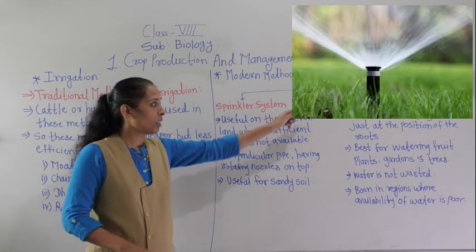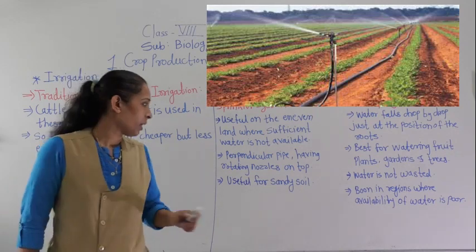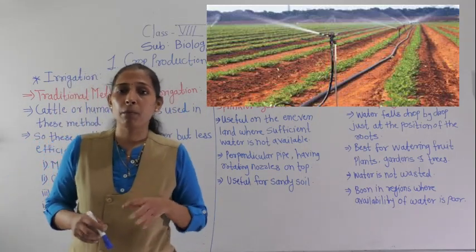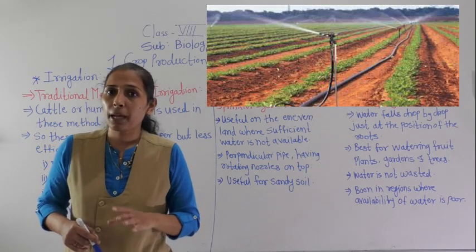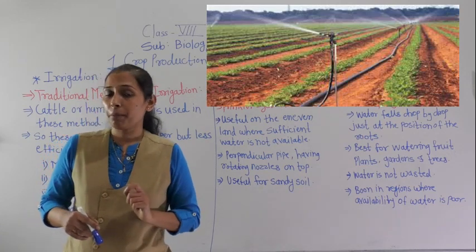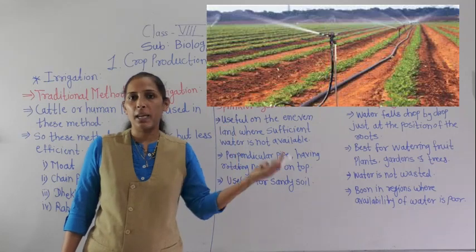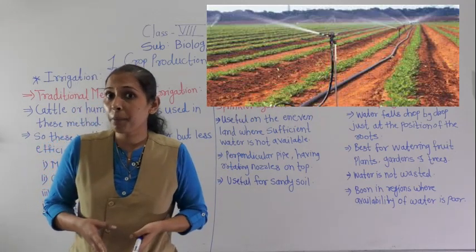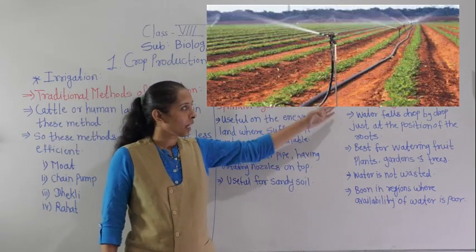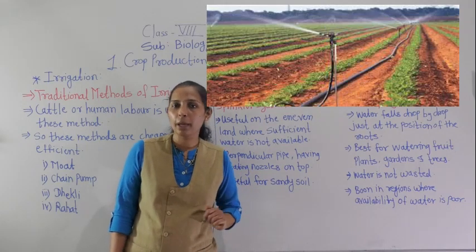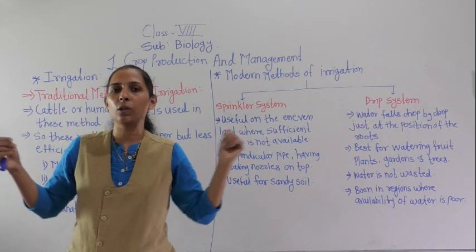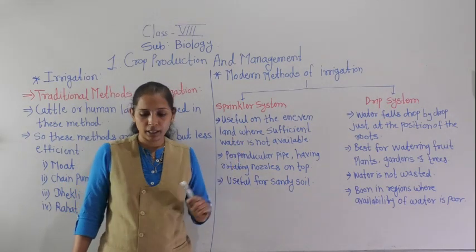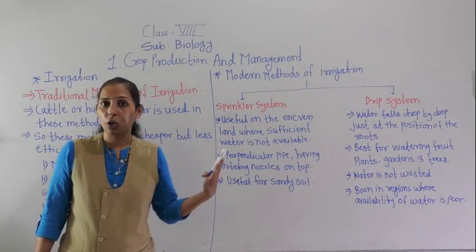That is what we call a nozzle, and that nozzle is rotating. So on the perpendicular pipe there is a rotating nozzle on top. Whenever water flows from the main pipe at regular intervals under high pressure, the water escapes through these nozzles and comes out. It almost looks like rain, sprinkling over the crops. This system may be useful for sandy soil.